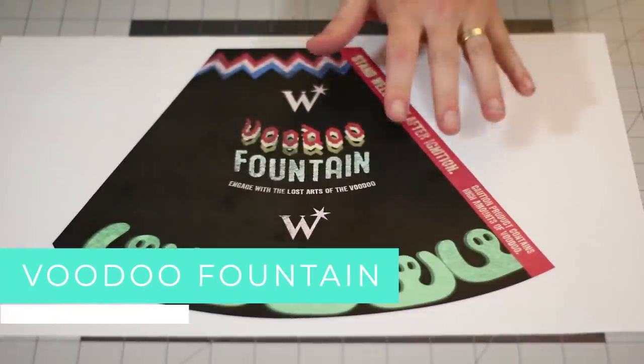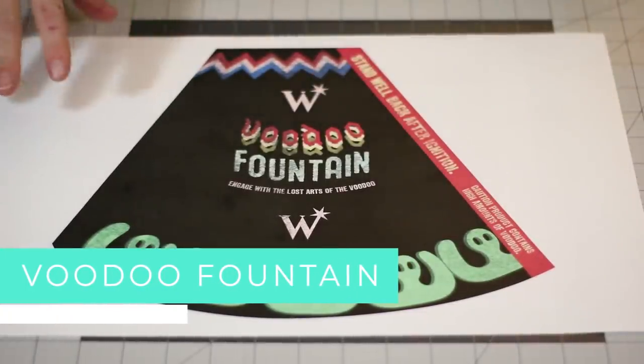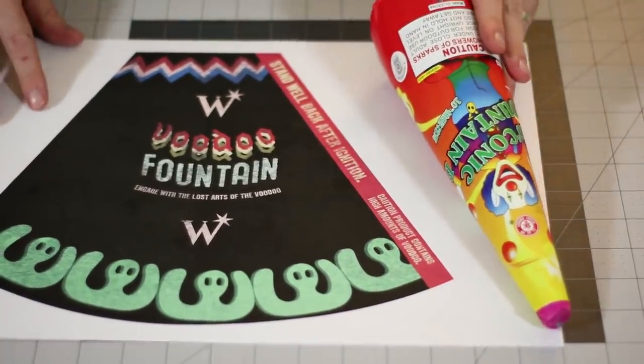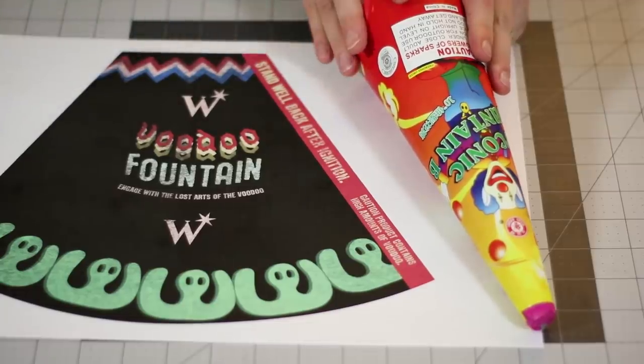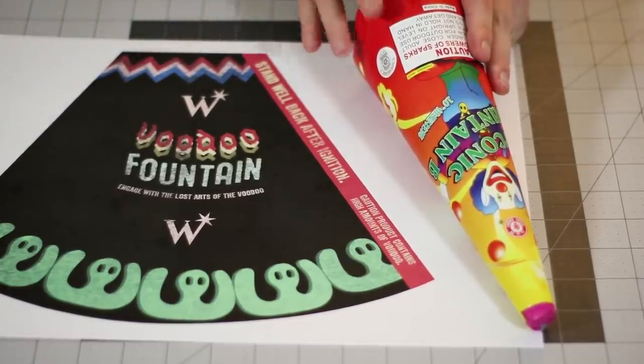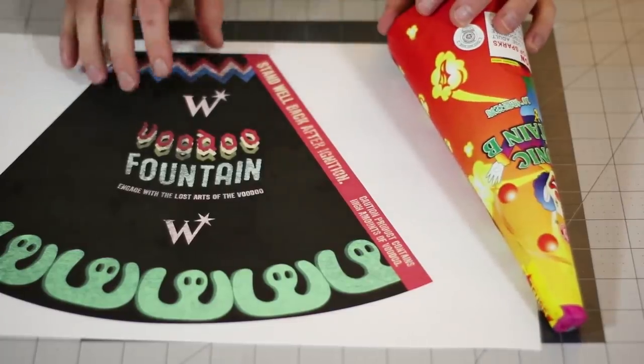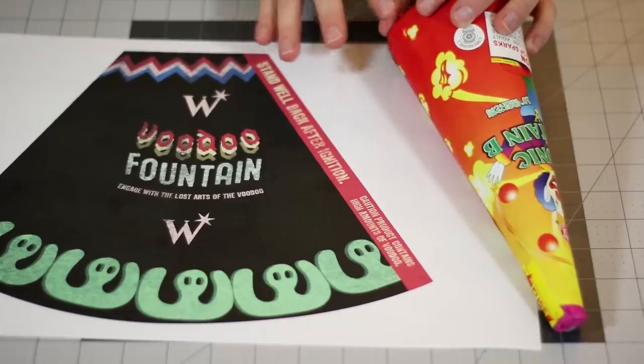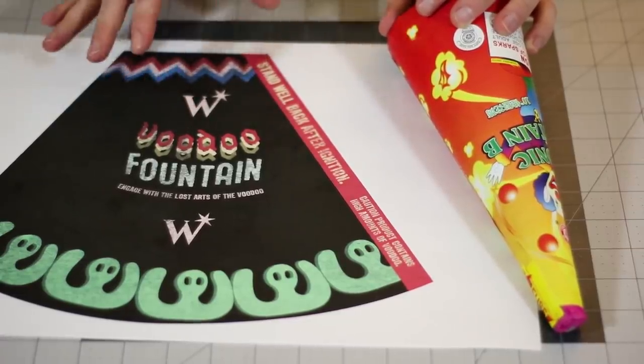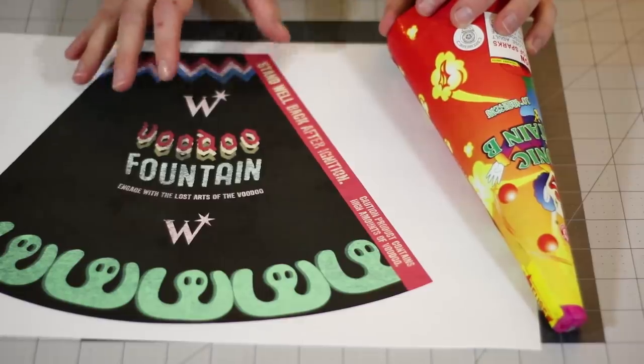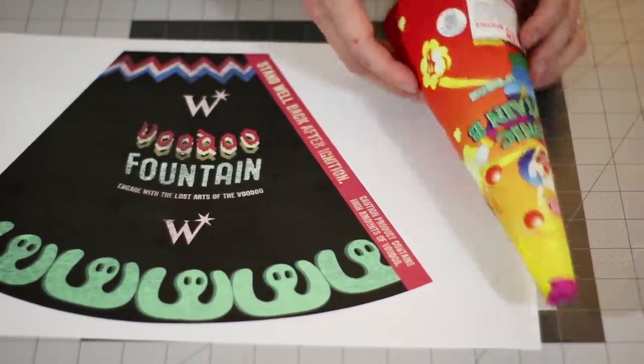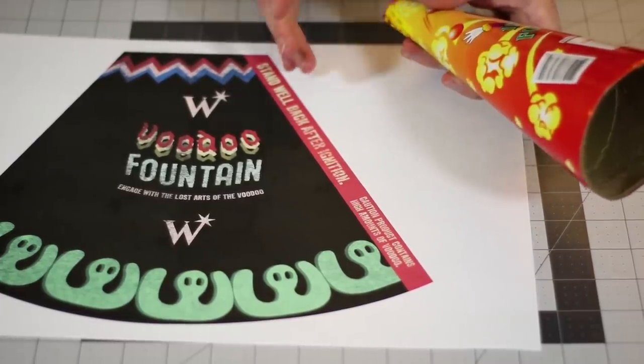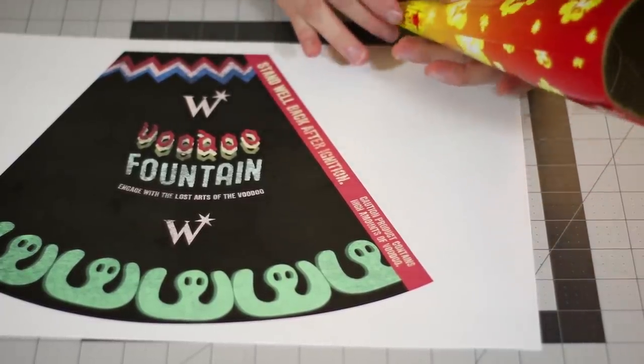So first we'll be doing the Voodoo Fountain. For all of these, we're just going to be rebranding fireworks that we can buy at the store. So I went to the local fireworks shop and bought this fountain here. I had to resize my template and rearrange a couple of things to make it fit. I'm going to include this template and also the original sized one before I messed with it. You might have to do some resizing of your own, but this is what I came up with.